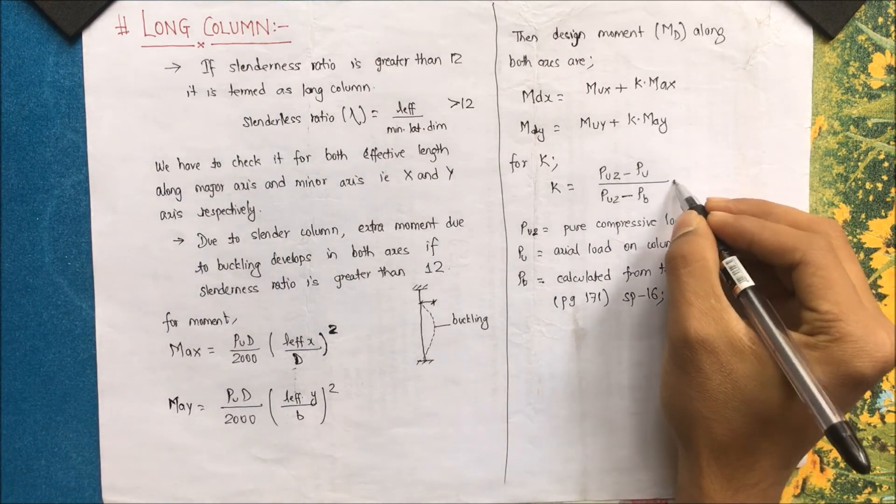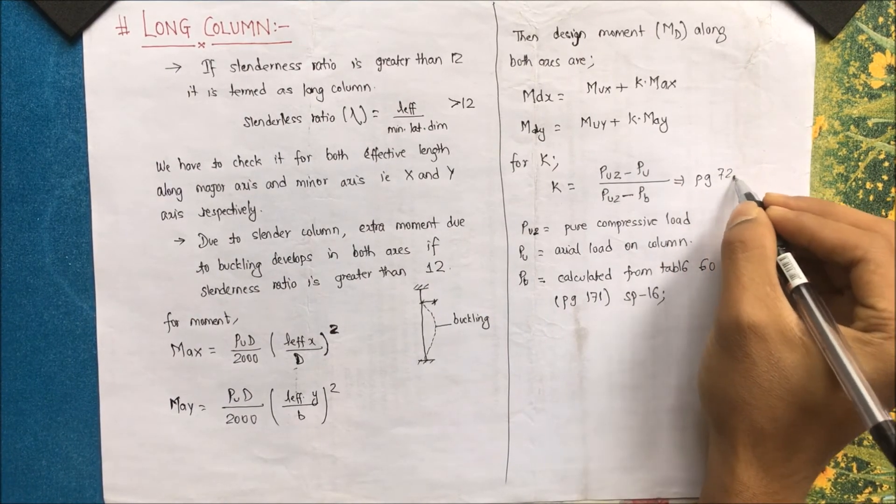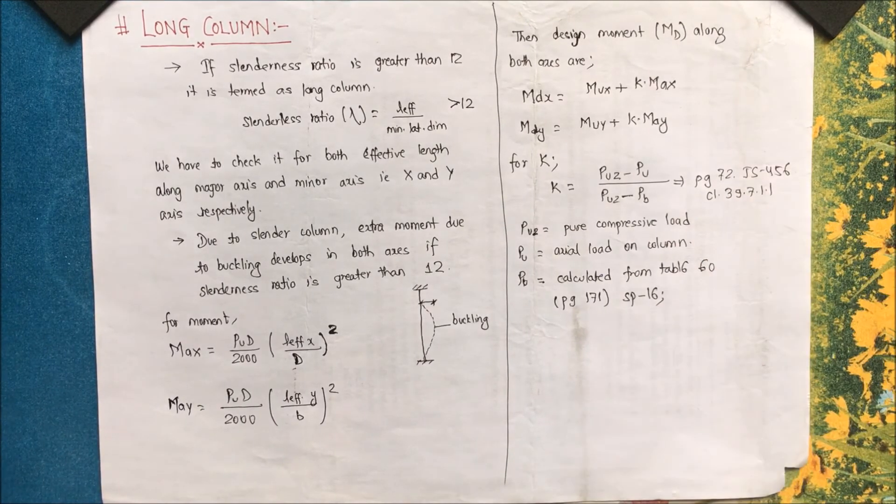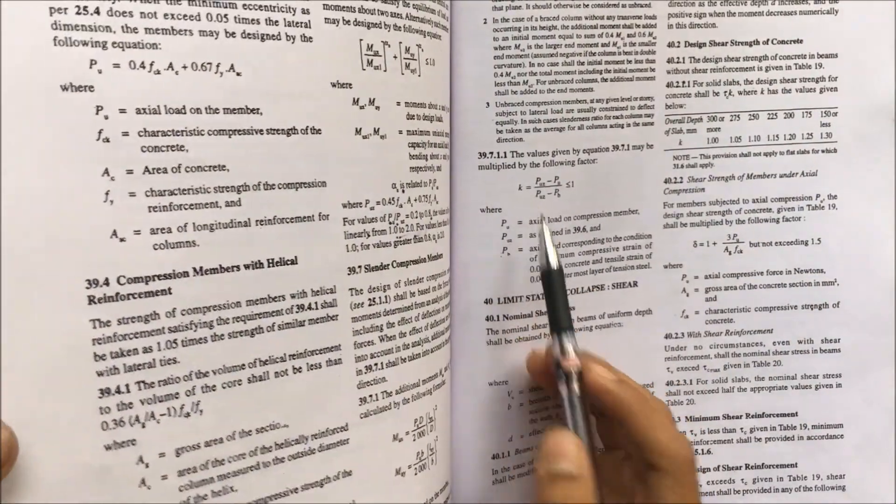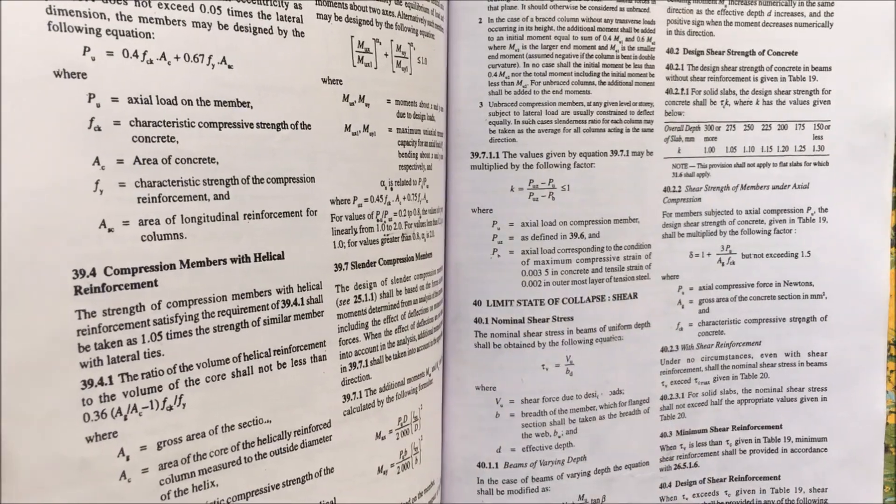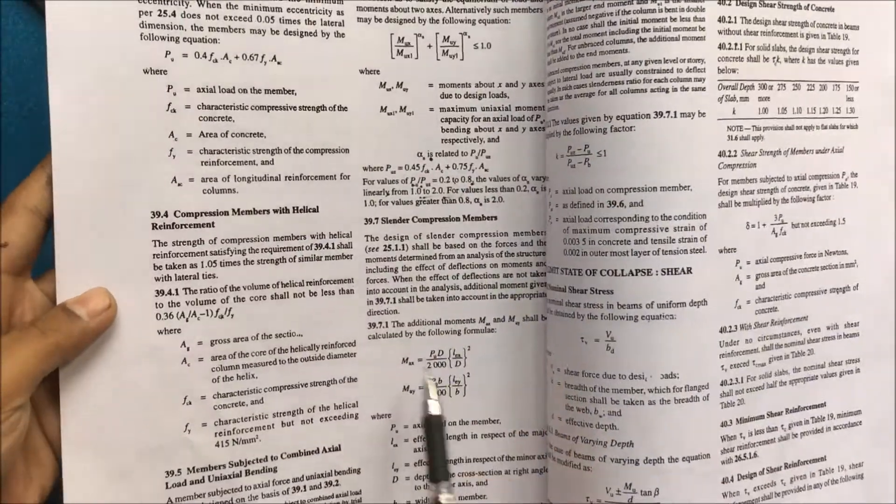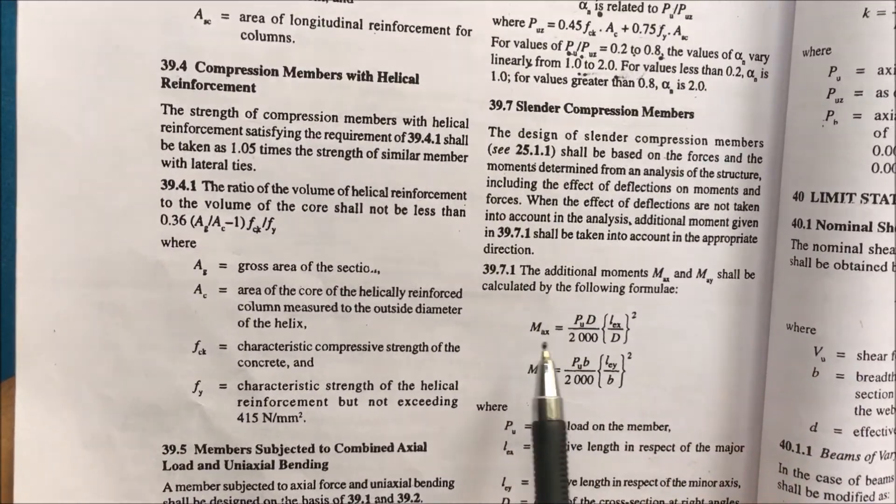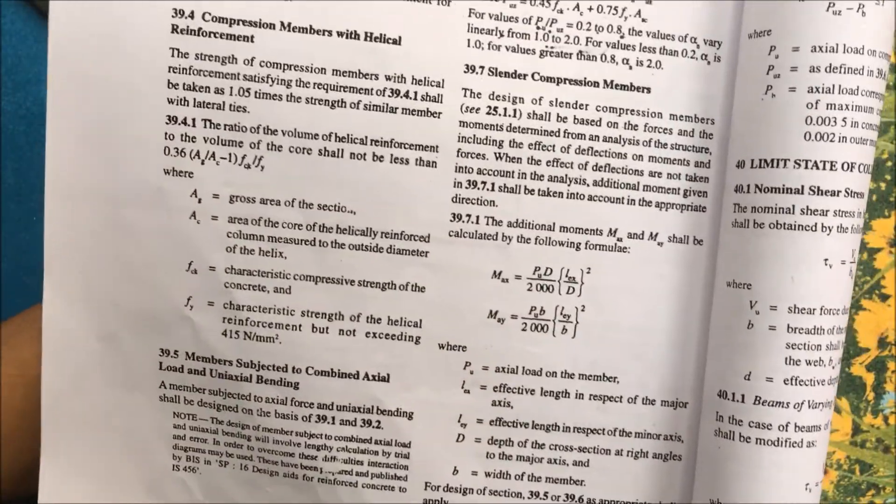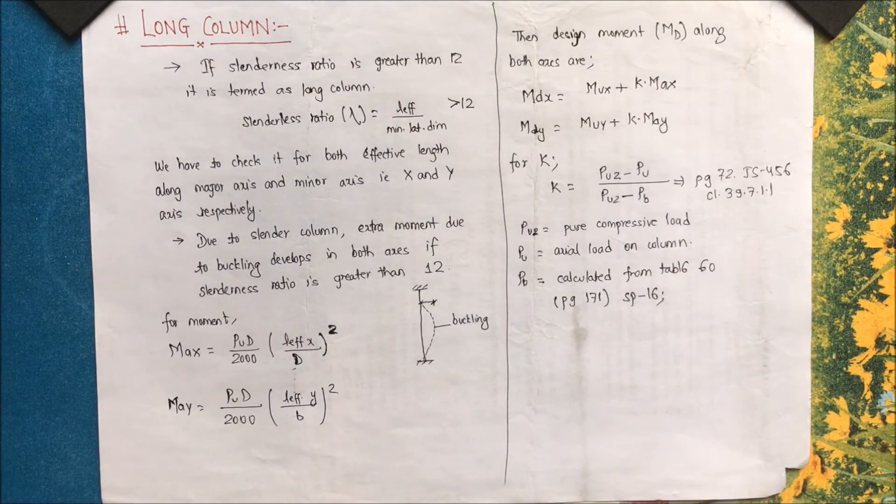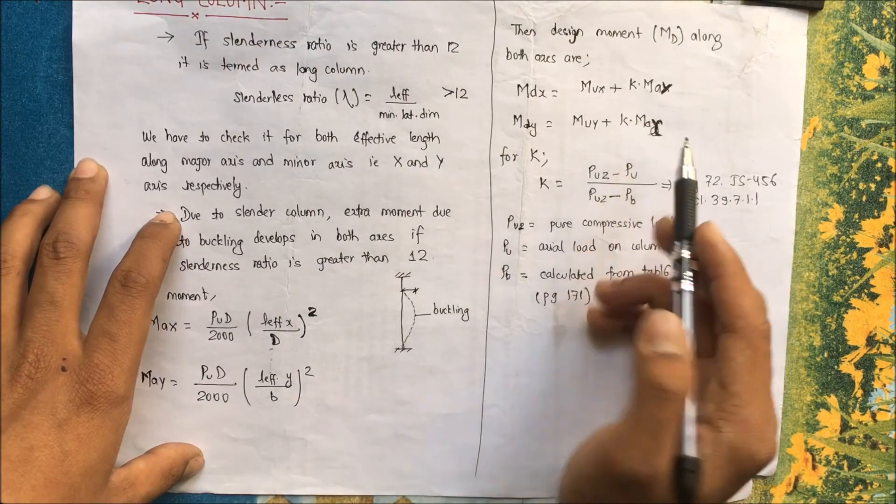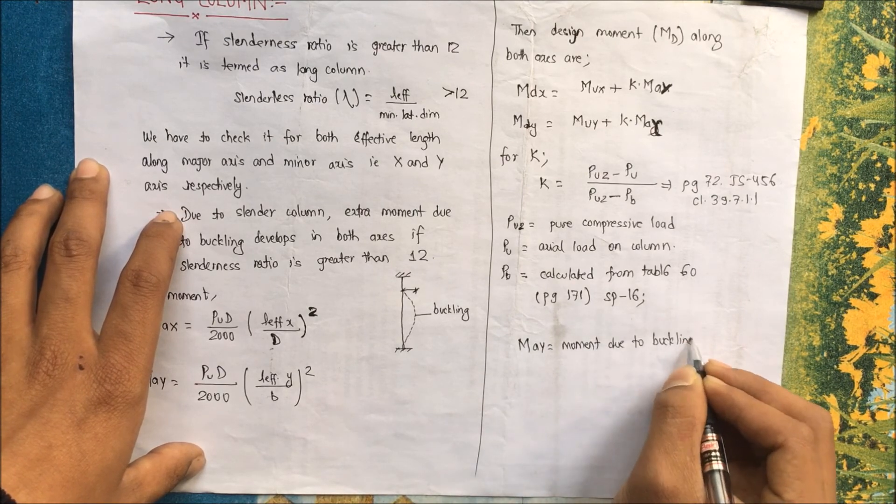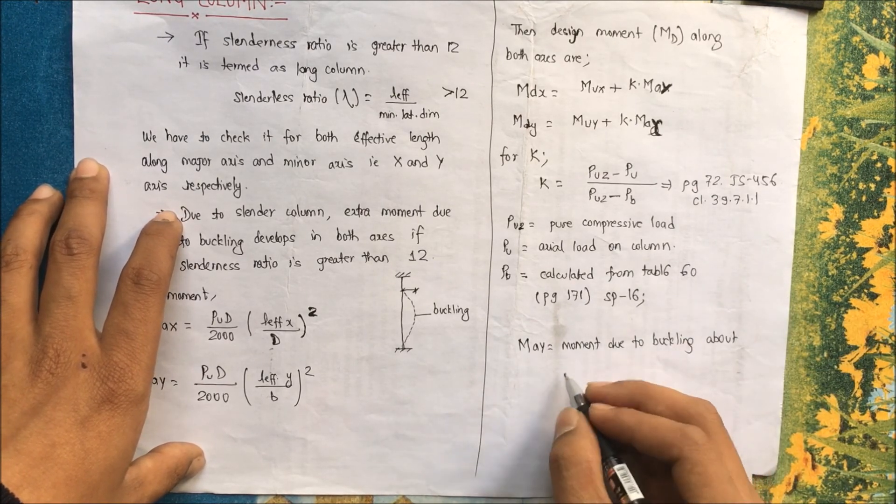Design moment can be calculated. You can also find this additional moment in clause 39.7.1 of IS 456. Please make a correction that M_ay and M_ax as I just said in the previous section. M_ay is the moment due to buckling about x-axis along y-axis.